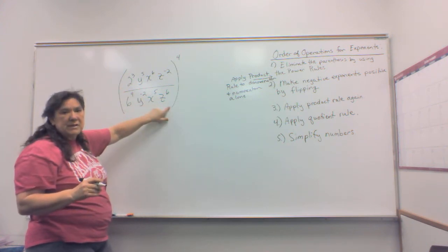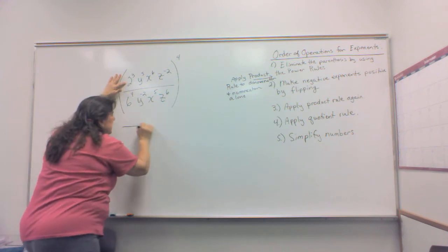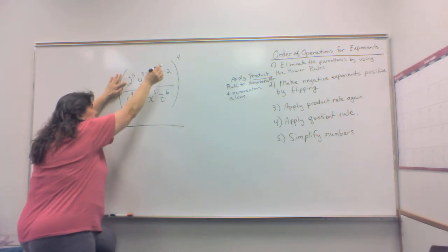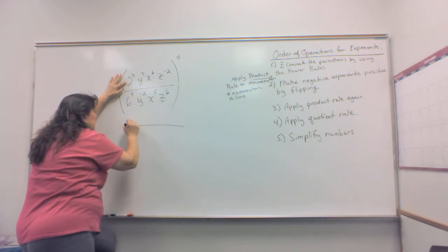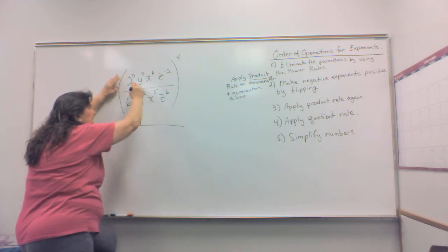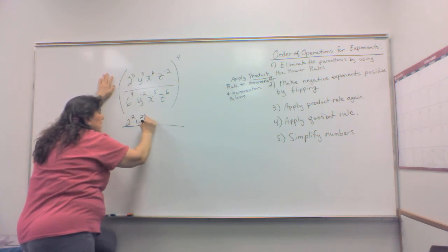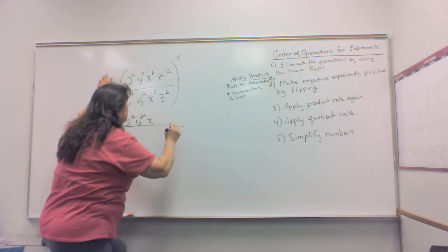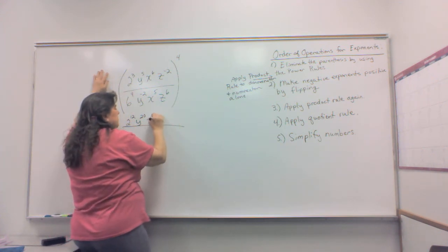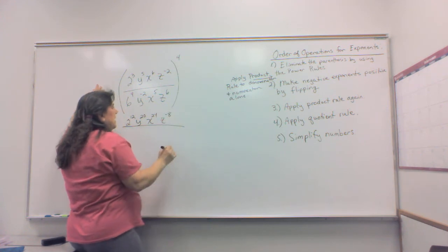eliminate the parentheses by applying the power rule. So my power rule is going to have three times four is 12. So this is two to the twelfth power. Y to the five times four, which is 20. X to the six times four, which is 24. Z to the negative two times four, which is negative eight.